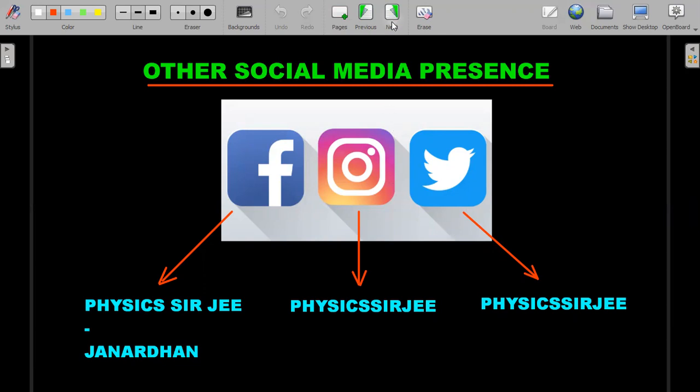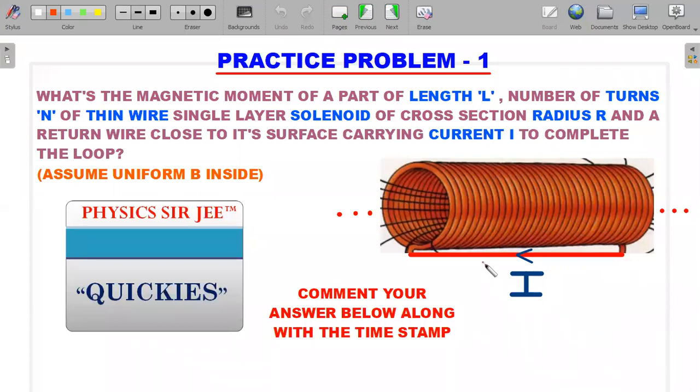Now practice problem number one—it's a basic simple question. We'll start with the easier one and move to tougher questions. I won't read it out; just make sure you go through it on your own. This is an ideal solenoid, and we're taking the ideal case of magnetic field being uniform inside. The radius is very small, length is large.